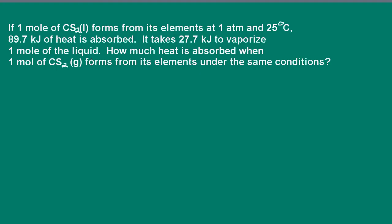Hi, welcome to Pathways to Chemistry. I'm Dr. Ann O'Connor. Here we're told that one mole of carbon disulfide, which is a liquid, forms from its elements at one atmosphere of pressure and 25 degrees Celsius. Under these conditions, 89.7 kilojoules of heat is absorbed. It takes 27.7 kilojoules to vaporize one mole of the liquid. How much heat is absorbed when one mole of carbon disulfide gas forms from its elements under the same conditions?